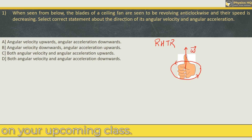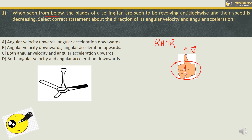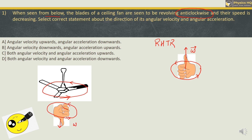As per the question, we are supposed to observe the blades of a ceiling fan from below, and it was found that it is revolving in an anticlockwise direction. Now if we apply the right hand thumb rule and curl the fingers of our right hand in the direction of the motion of the blades, we will find that the thumb is pointing downwards. Therefore angular velocity over here will be pointing downwards.